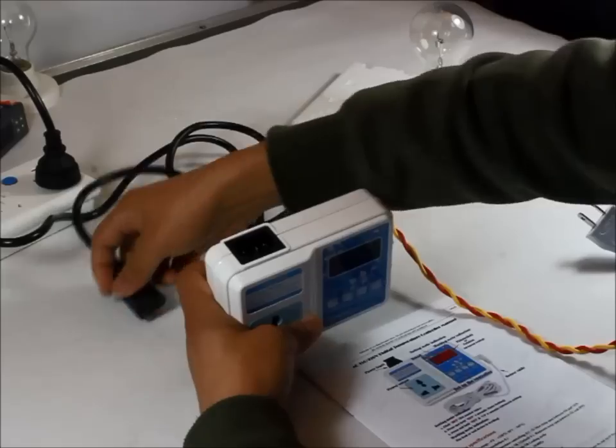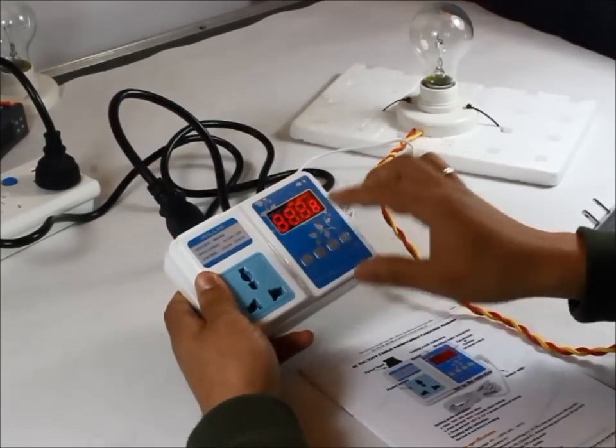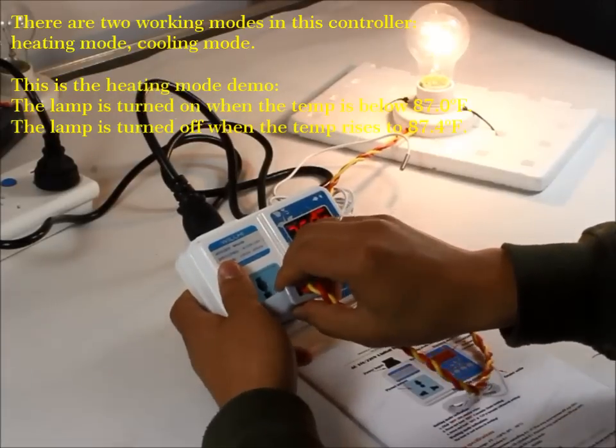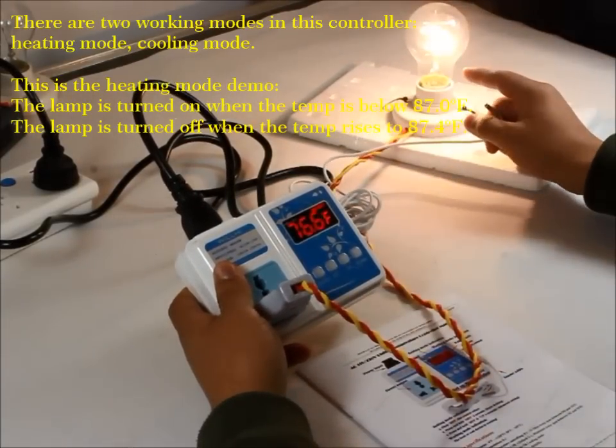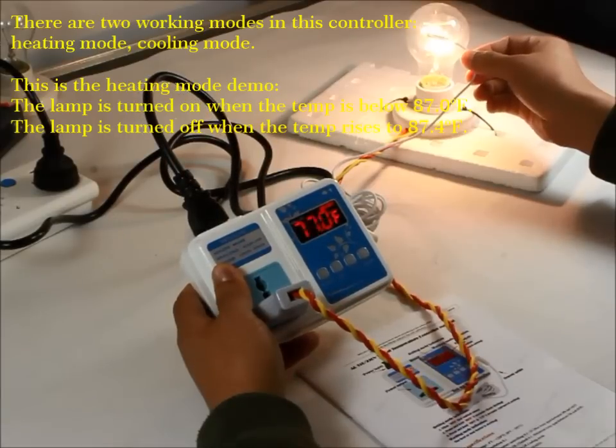This is the power for the controller. This is the outlet for the device you want to control. Then the device will be turned on or turned off according to the temperature the probe detected.